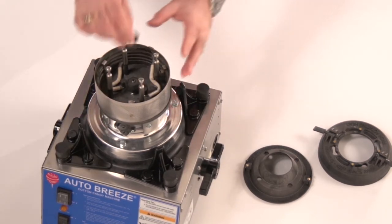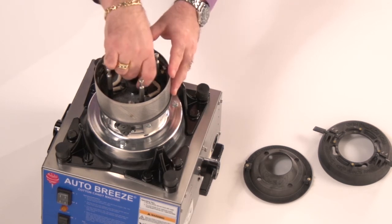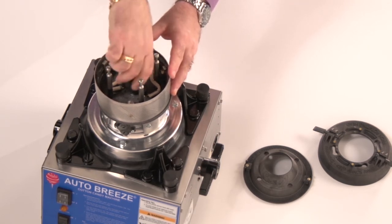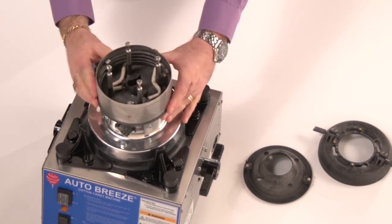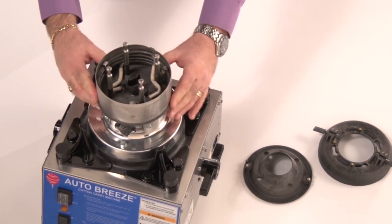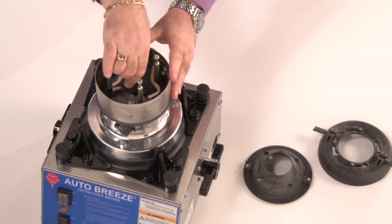The center nut goes back on and that holds everything down nice and tight. Now you can wiggle that back and forth to make sure that it's lined up in the groove that goes all the way around the perimeter.